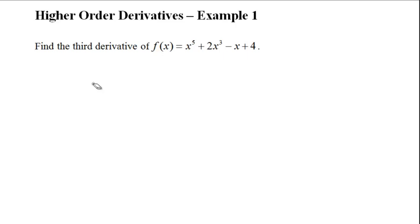This is an example of how to take a higher order derivative. The question here is: find the third derivative of f of x equals x to the power of 5 plus 2x cubed minus x plus 4. When we're finding a higher order derivative, we're basically taking a derivative multiple times. For this question, it says find the third derivative, so we're going to take the derivative three times.